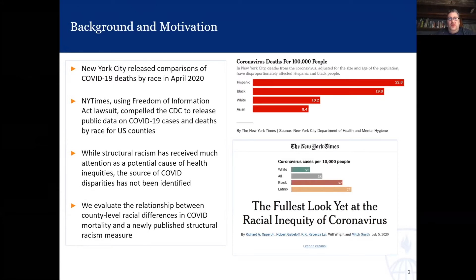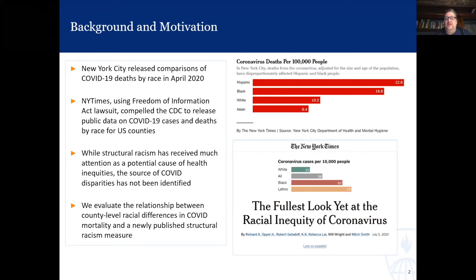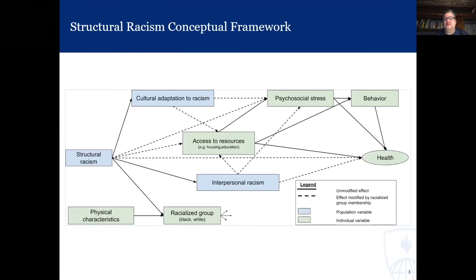Our work here is really driven by the idea that while structural racism has received a lot of attention as a cause of health inequities, it's unclear what the source of the COVID disparities is at this point, and that has been perhaps less carefully studied than the fact that the disparities exist. Our goal is to evaluate the relationship between county-level racial differences in COVID mortality and a newly published structural racism measure that Elizabeth and I and a couple of other co-authors recently published in the American Journal of Preventive Medicine.